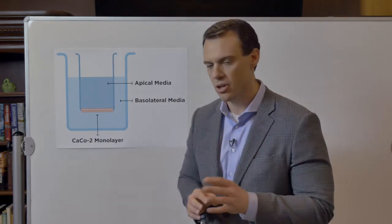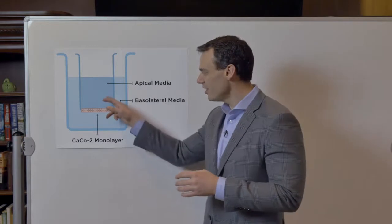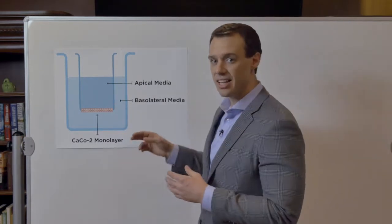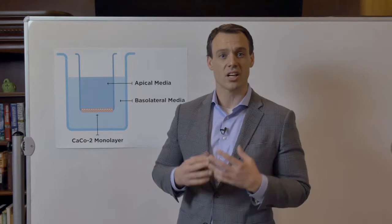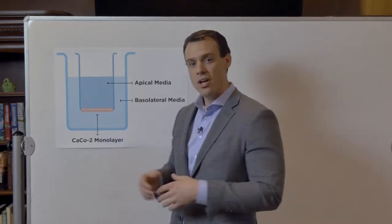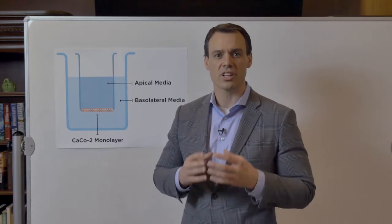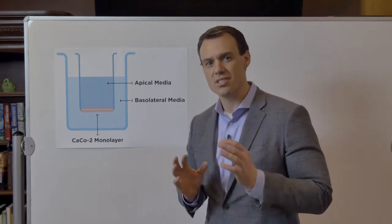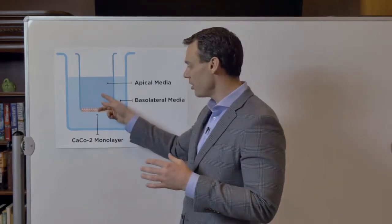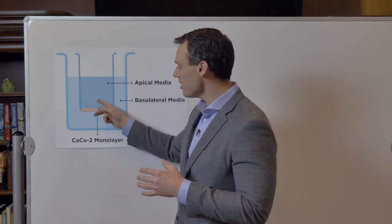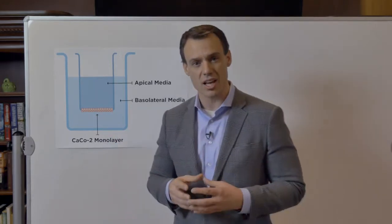How does the CACO2 assay work? In simple terms, there are two chambers, one inside the other. On the bottom of the inside chamber is a layer of cells called CACO2 cells, which resemble the small intestine. There is no other way for the constituents of the essential oils to move from the inner chamber to the outer chamber other than passing completely through the CACO2 cells.